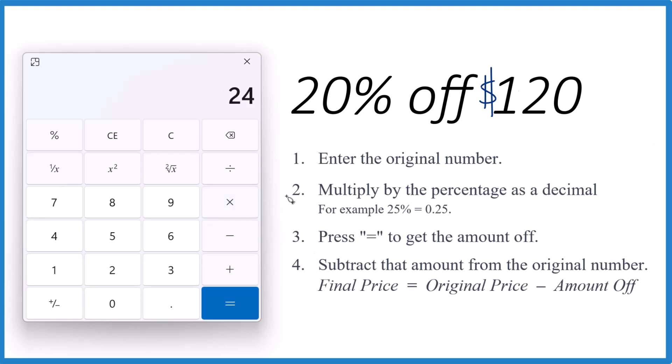Make sure you hit the equals and that's 24. What that 24 means is that's $24, that's how much you save. Essentially, it's 20% of 120, that 20% portion of 120, which is $24.